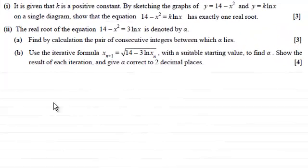Hi. Now in this question, first of all, it is given that k is a positive constant. And by sketching the graphs of y equals 14 minus x squared and y equals k times the natural log of x on a single diagram, show that the equation 14 minus x squared equals k times the natural log of x has exactly one real root. So if you'd like to have a go at this and haven't done so already, I'll just give you a moment to pause the video, do come back when ready and you can check your work solution against mine.